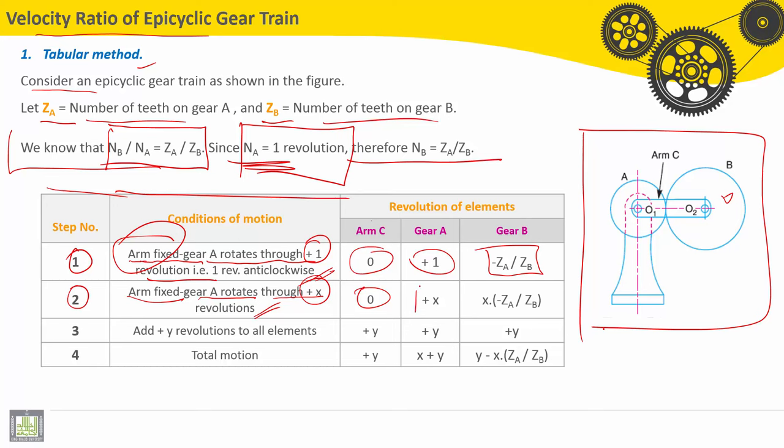Then here we have plus X revolution, and then velocity or speed of gear B will be X multiplied by minus ZA divided by ZB.